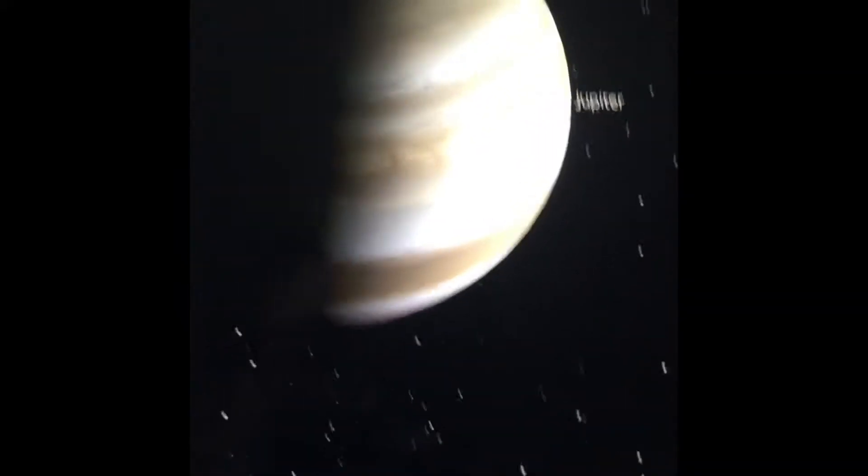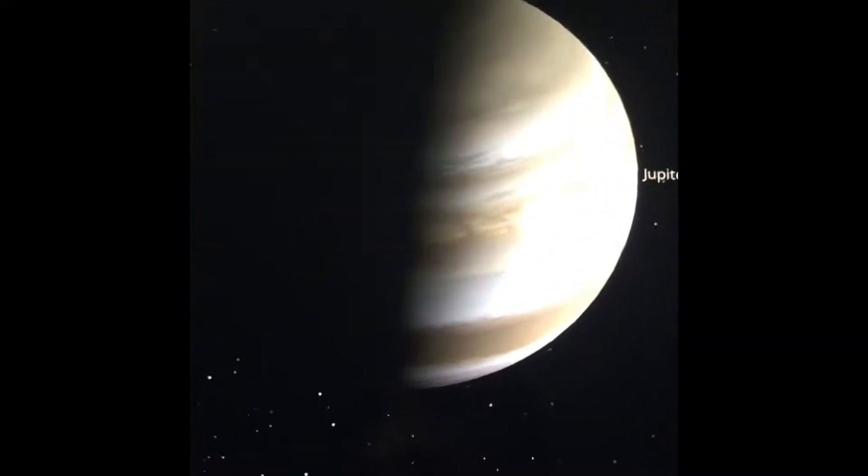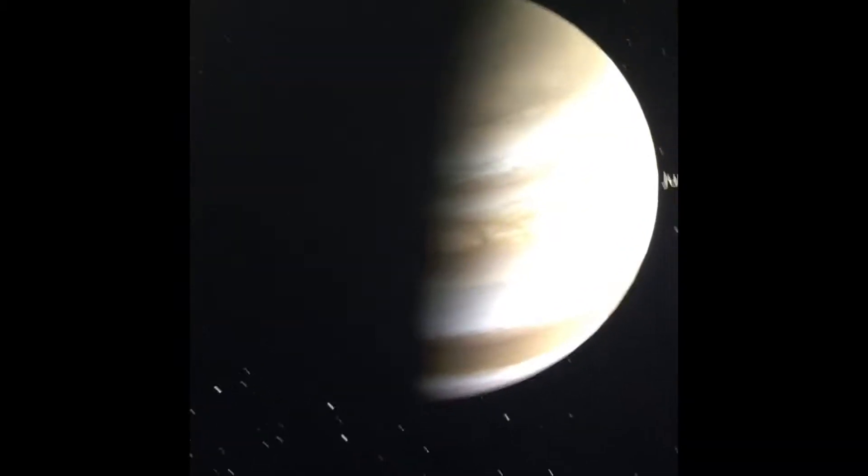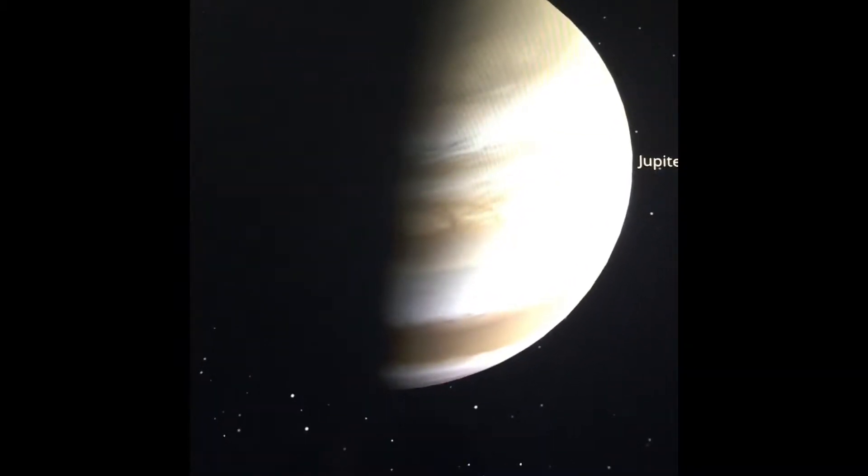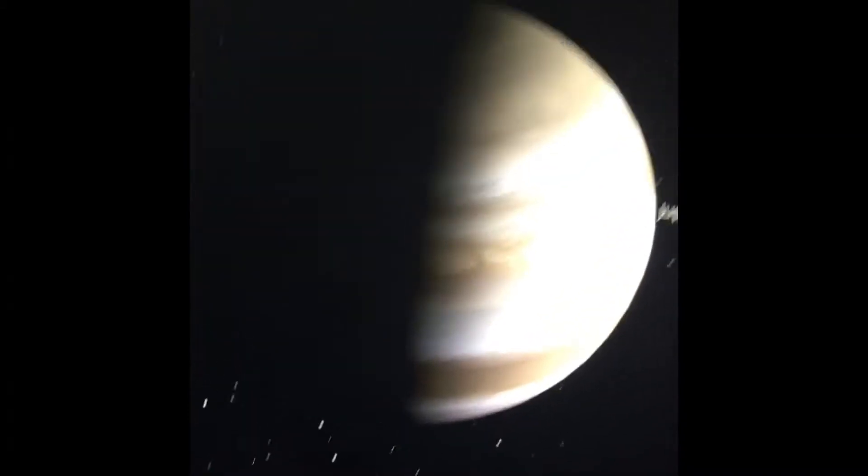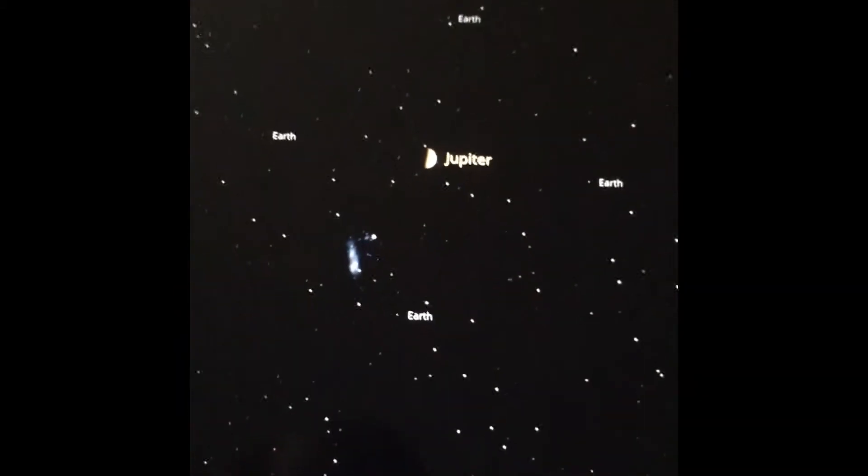Jupiter is a very interesting planet. Not only is it the biggest planet, but it's the closest gas giant to our star, the Sun. And not only that, it can be surrounded by four Earths.